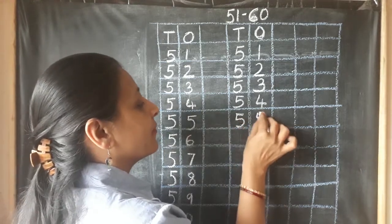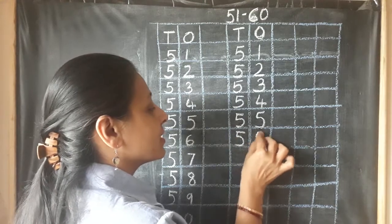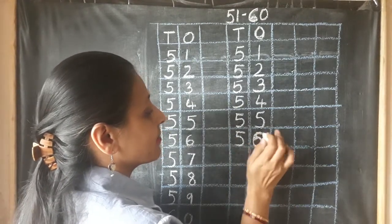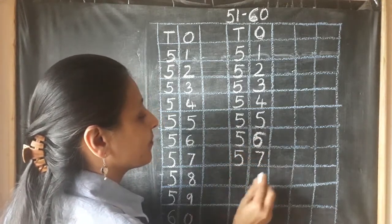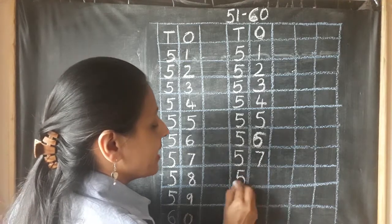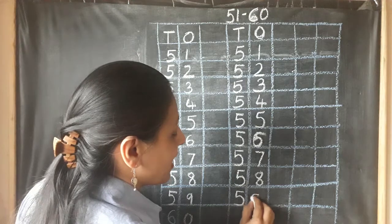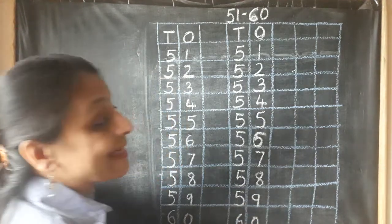5, 5, 55. 5, 6, 56. Sorry, 5, 6, 56. Ma'am has made a mistake. Okay. 5, 7, 57. 5, 8, 58. And 5, 9, 59. And 6, 0, 60.